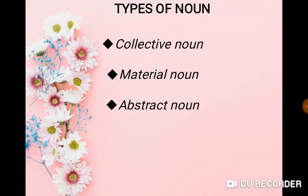So, these are the types of nouns. What are they? Collective noun, material noun, abstract noun. Say with me, children: collective noun, material noun, abstract noun. Yes, mashallah.